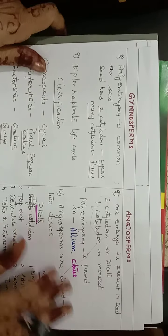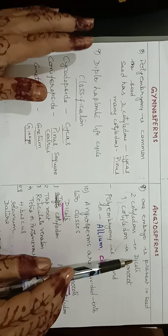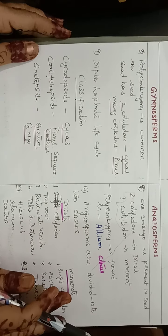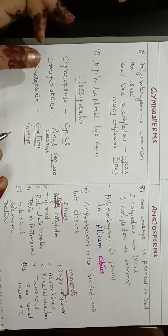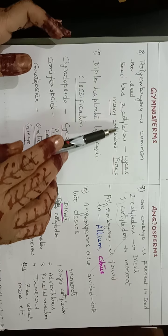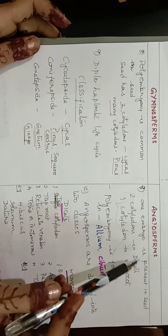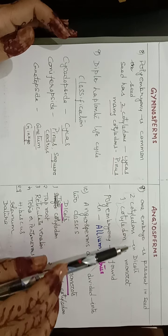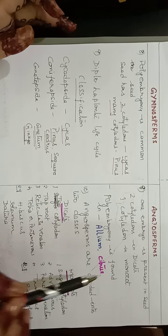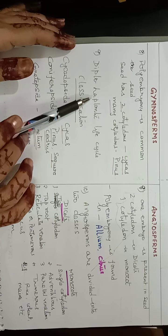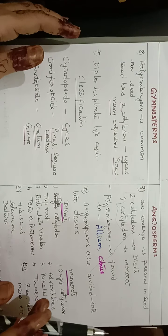After fertilization, gymnosperms form seeds where polyembryony is most common. The seed has two cotyledons as in Cycas, or more than two in Pinus. In angiosperms, normally only one embryo is present; dicots have two cotyledons and monocots have one. Polyembryony is very rare in angiosperms, found in examples like Allium and Citrus. Both groups show diplohaplontic life cycles.